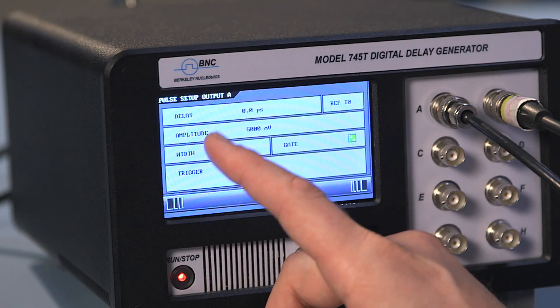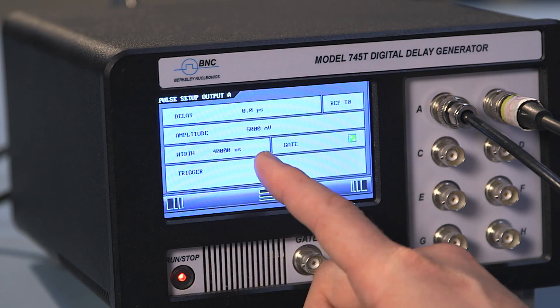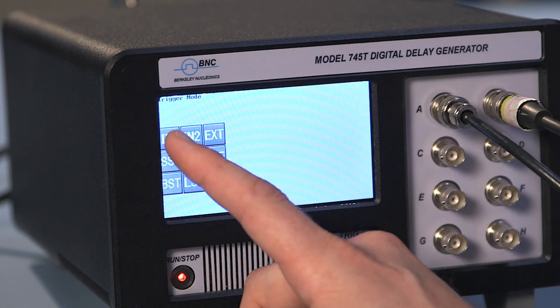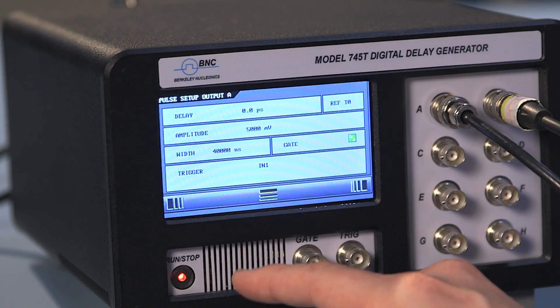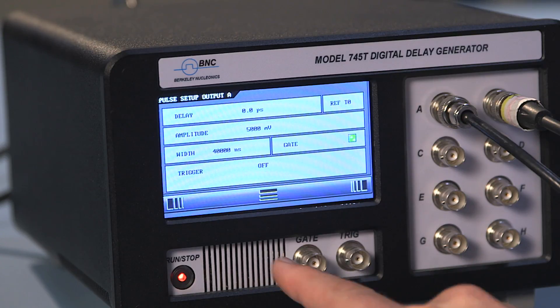Here I can set the delay, the width, the gate mode, and the trigger. For example, if I want to switch from an internal trigger to an external trigger, you see that internal trigger is turned off and now it's looking for an external signal.